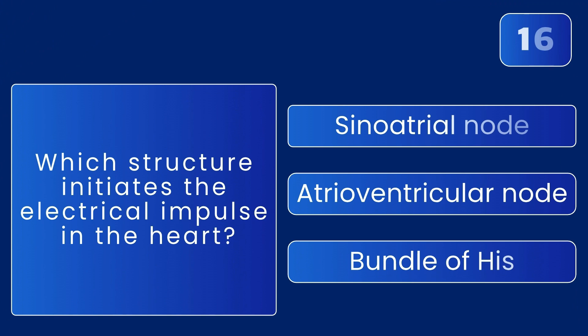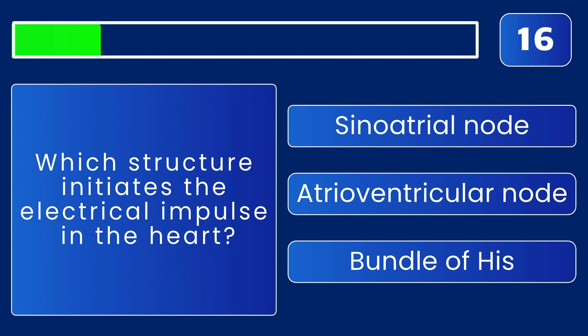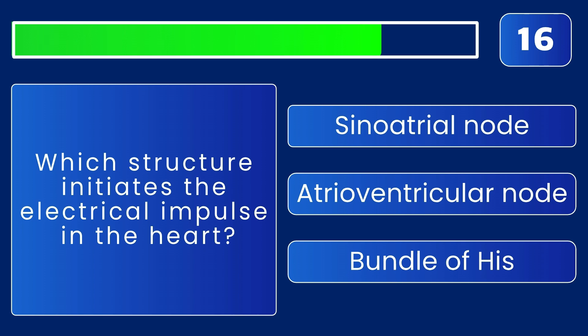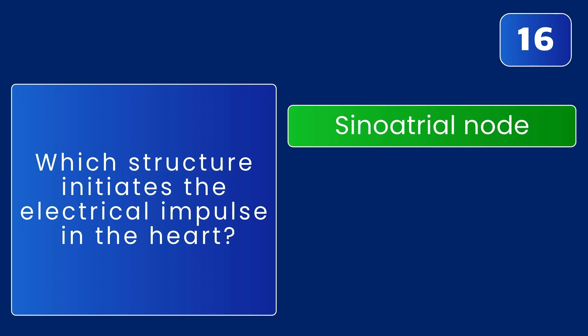Which structure initiates the electrical impulse in the heart? It's the sinoatrial node — it sets the heart's rhythm.